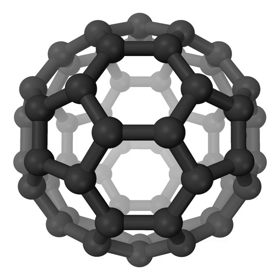Molecules found in the Sun include MgH, CaH, FeI, CrH, NaO, SiH, VO, and TiO. Others include CN, CH, MgF, NH, C2, SrF, zirconium monoxide, YO, ScO, and BH.